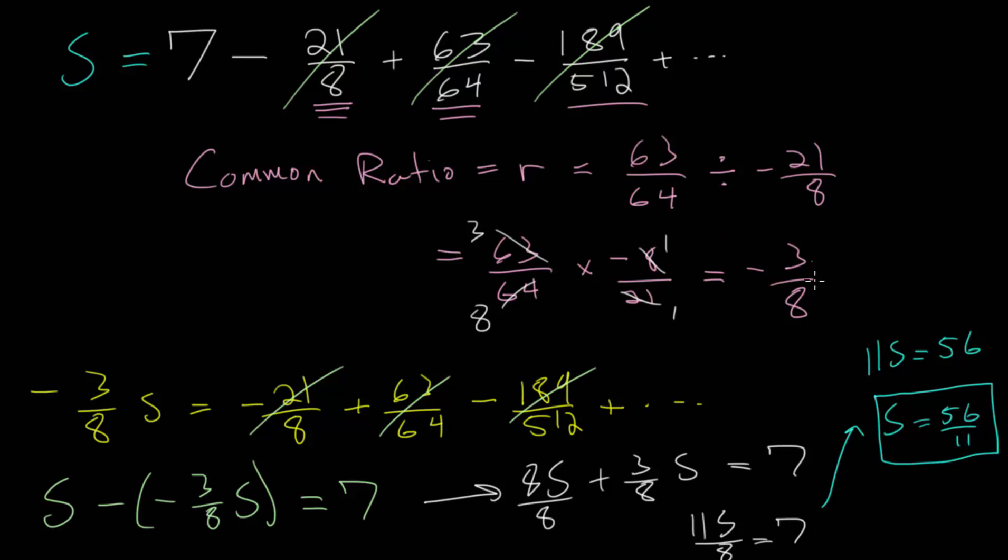So, when our common ratio is a negative fraction, we can also add this up and get some finite answer. So, this is really just 5 and 1 eleventh as a mixed number.